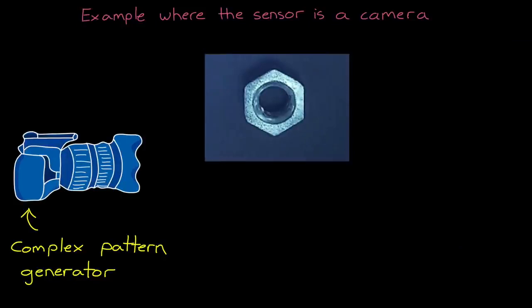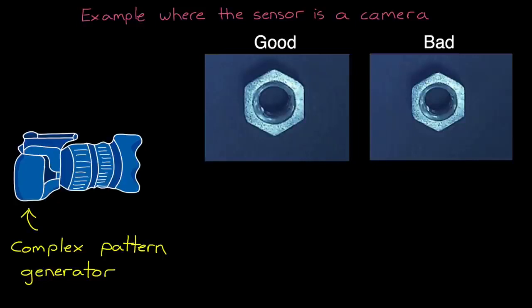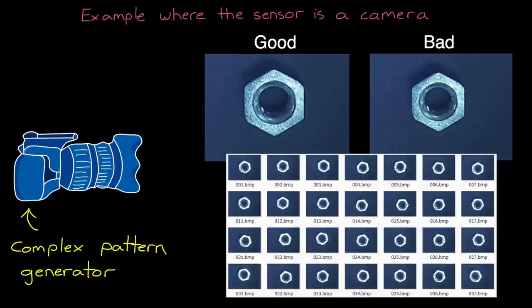And if we thought picking out relevant features of a high five was difficult, imagine trying to come up with the features that allow you to optically identify a good hex nut versus a defective one. Even if you had access to thousands of images of both, it would be nearly impossible to come up with an algorithm that would distinguish one from the other. At least it would be without deep learning.